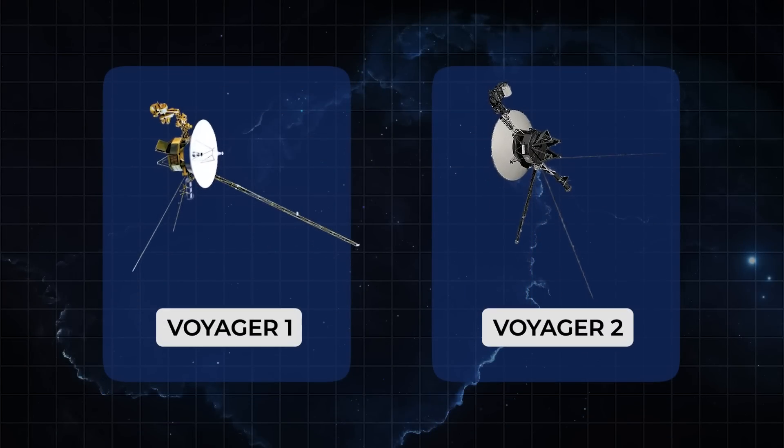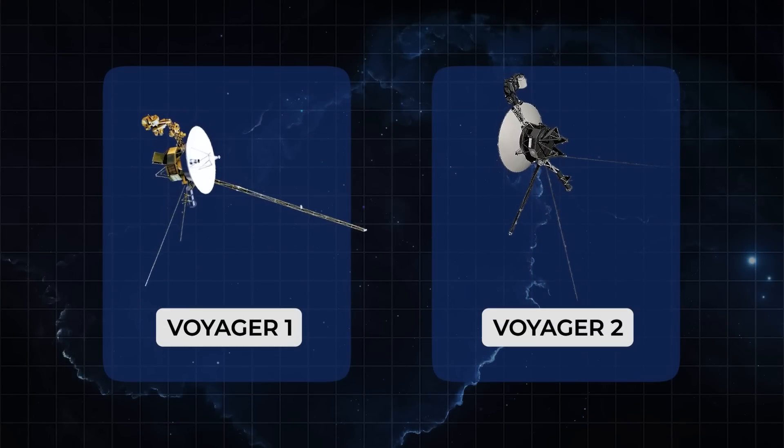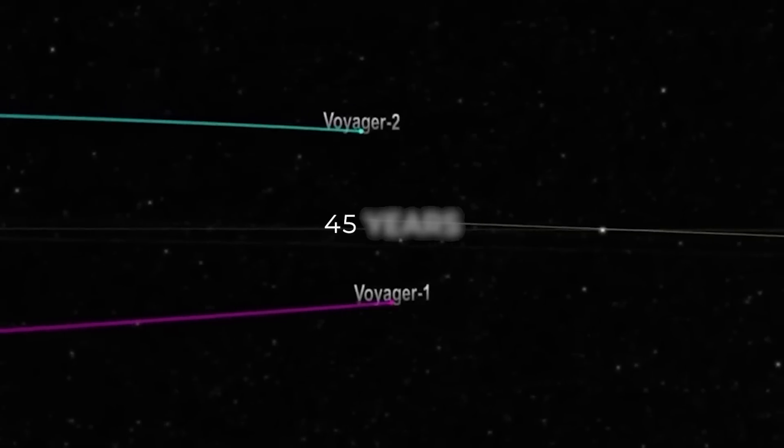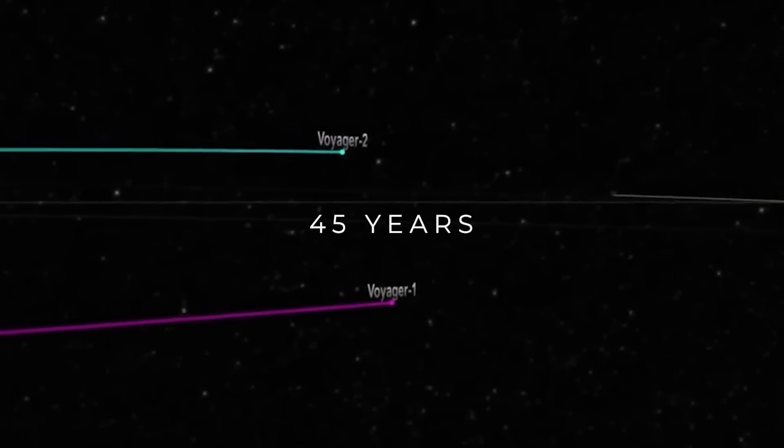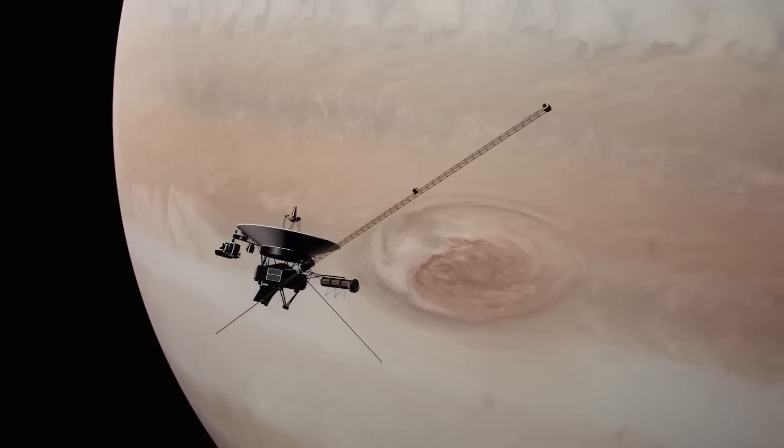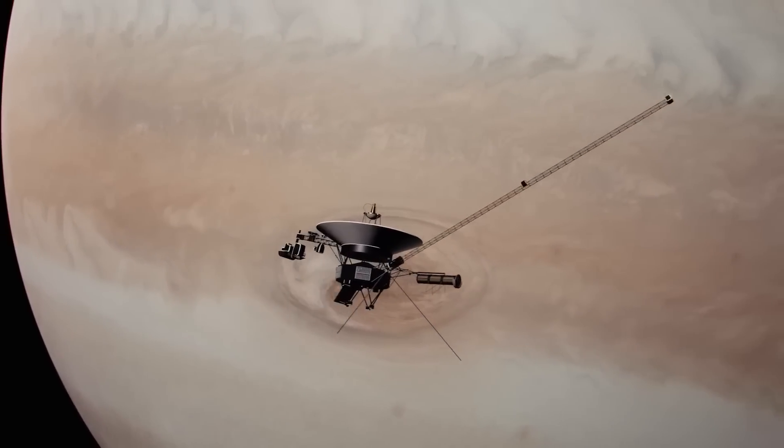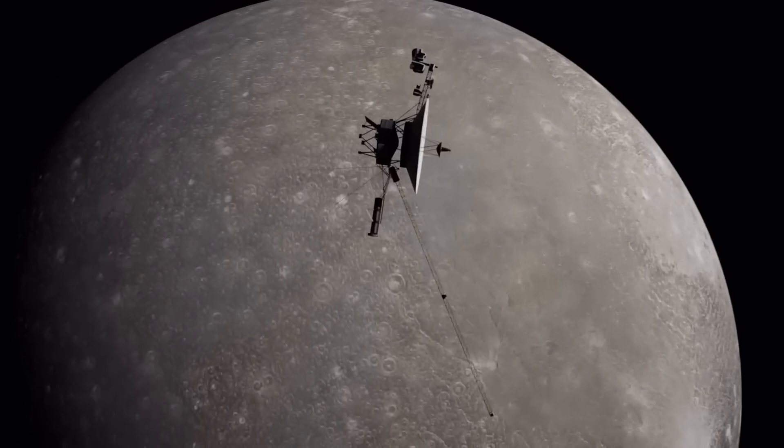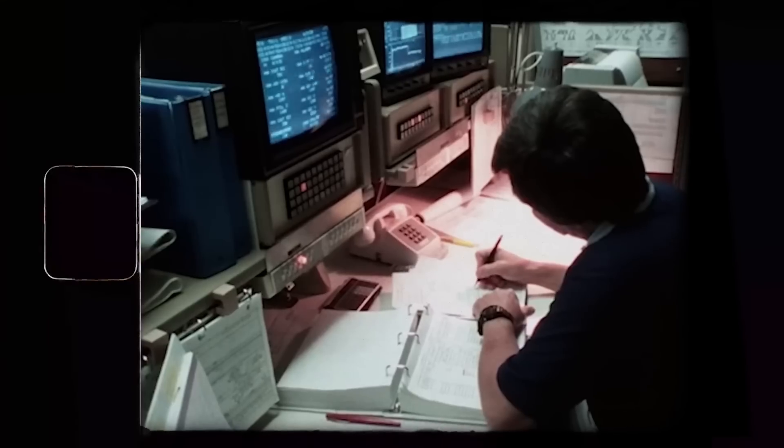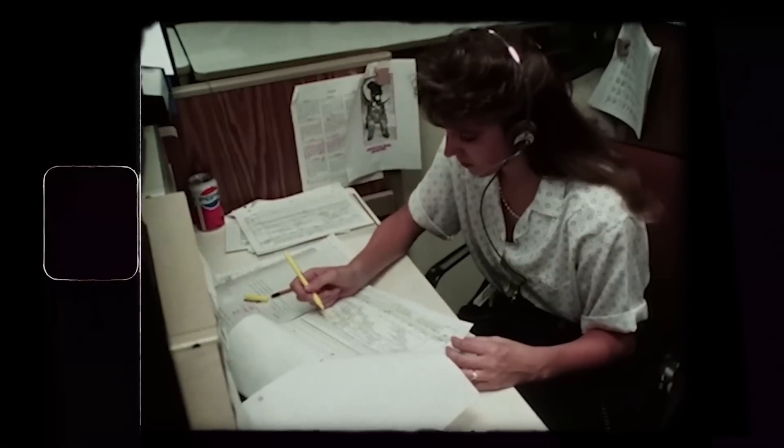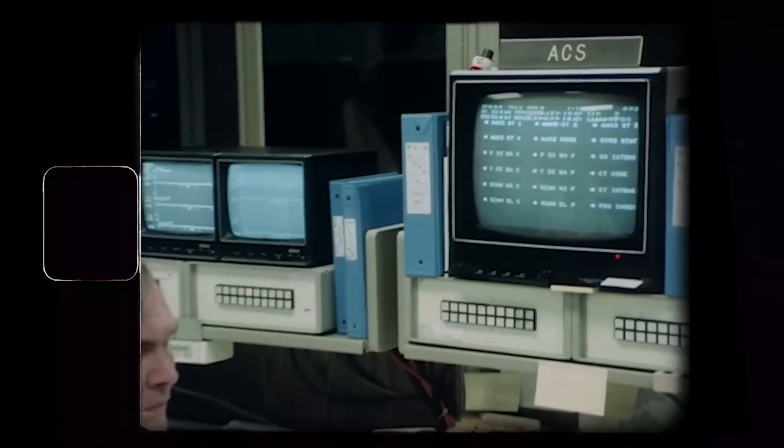The twin Voyager missions have unveiled great mysteries of space in the last 45 years of space exploration, giving us some of the very first and most important looks of the true state of our solar system. It would surprise you to find out that these missions were never meant to last this long.